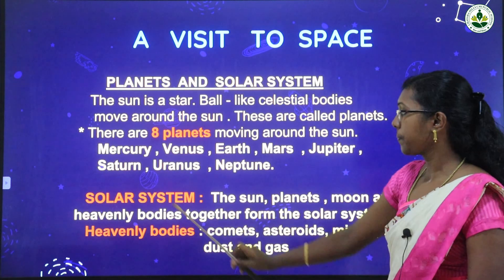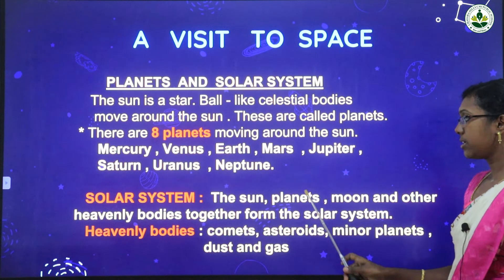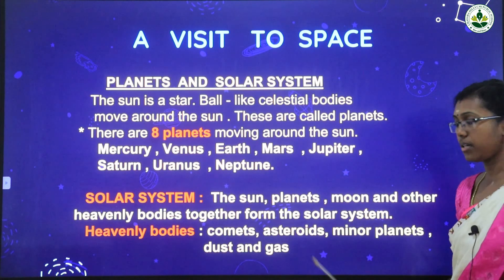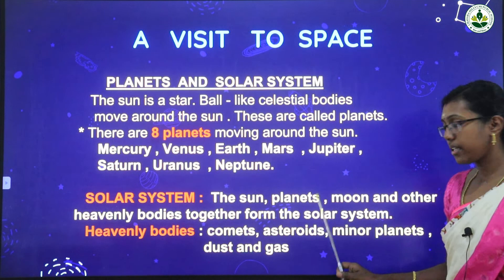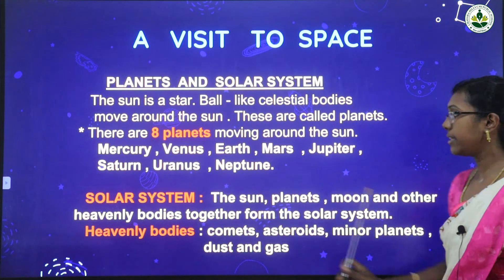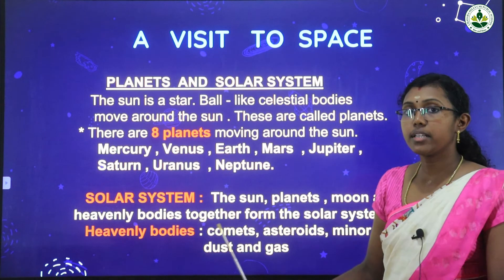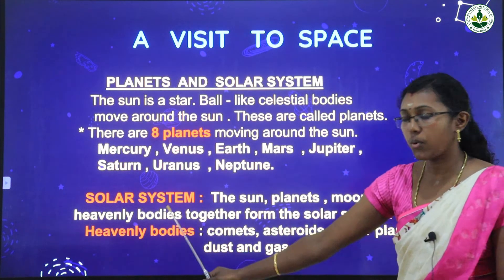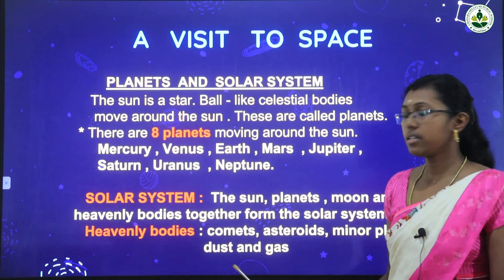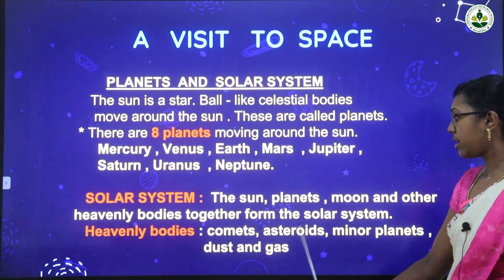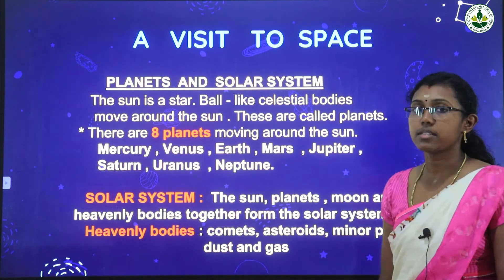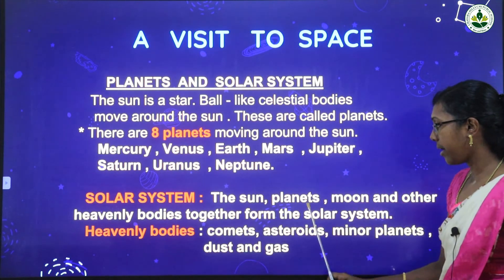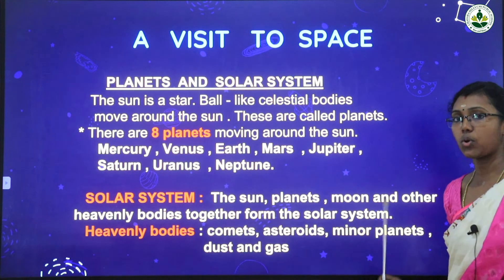What is the solar system? The sun, planets, moon, and other heavenly bodies together form the solar system. In the solar system we have the sun, planets, the moon, and other heavenly bodies. What are heavenly bodies? Comets, asteroids, minor planets, dust, and gas — these are all included. Learn this sentence: 'The sun, planets, moon, and other heavenly bodies together form the solar system.'